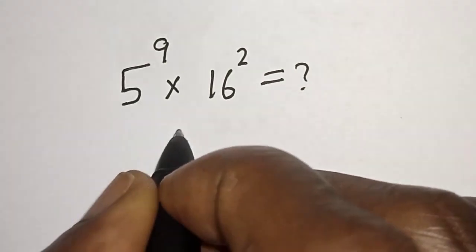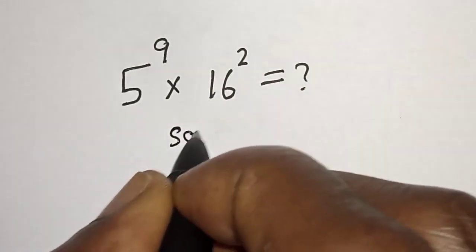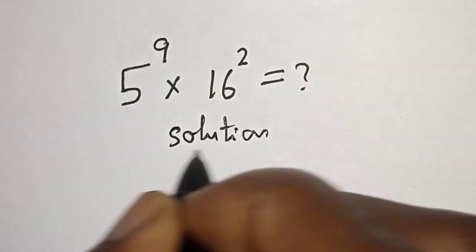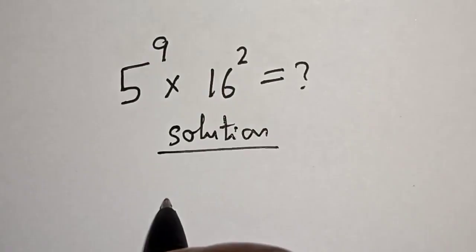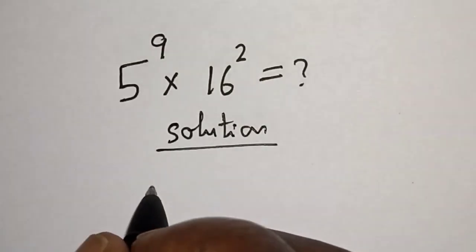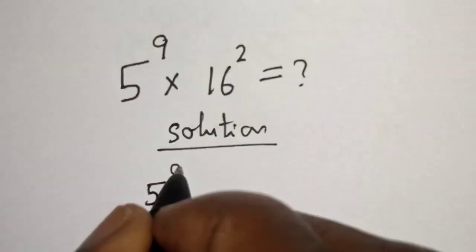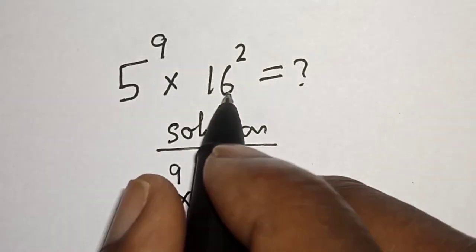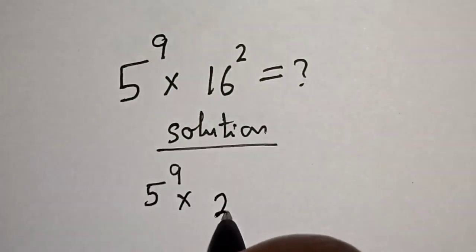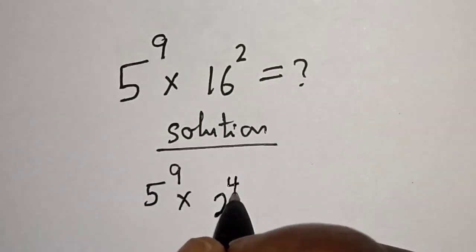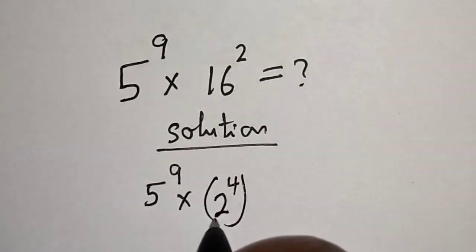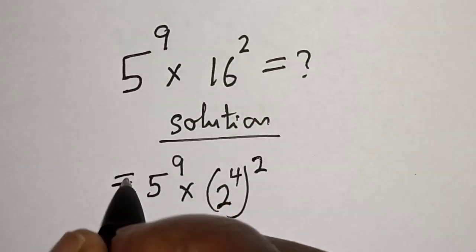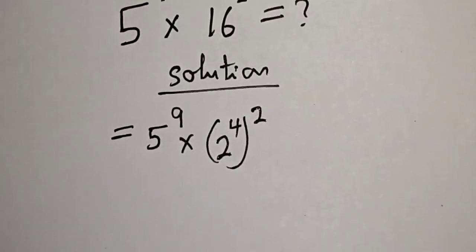Solution: we have 5 raised to power 9 multiplied by 16 squared. We rewrite 16 as 2 raised to power 4, raised to power 2. Take note of this exponential rule coming up next.